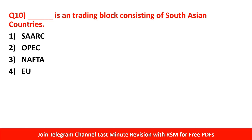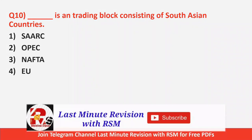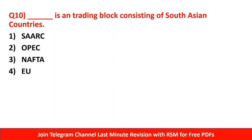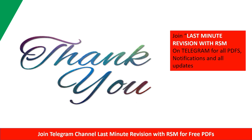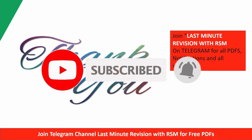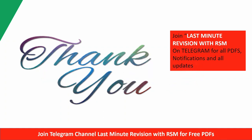Question number 10: SARC is a trading block consisting of South Asian countries. Options: SARC, OPEC, NAFTA, EU. Full forms: SARC - South Asian Association for Regional Cooperation; OPEC - Organization of Petrol Exporting Countries; NAFTA - North American Free Trade Agreement; EU - European Union. The South Asian one is SARC. SARC removes trade barriers so there is free flow of trade - that is also what WTO works for, reducing restrictions on trade. If you liked this video, please like, share with your friends, subscribe to the channel, and join the Telegram channel - Last Minute Revision with RSM - where all PDFs will be shared. Till then, as always, work harder, be smarter.